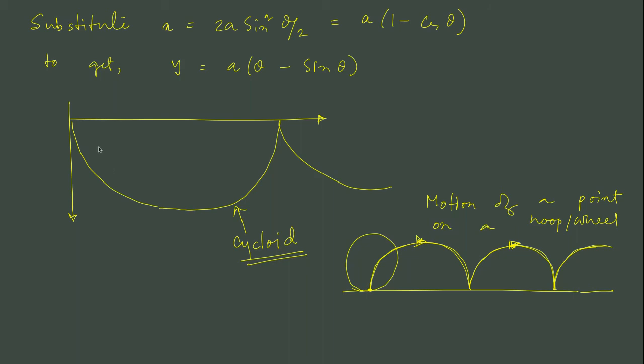It is a very famous problem. I mean earlier people were looking at how we can define a shape along which the journey is minimal. Cycloid is the solution and we got this shape using variational principle. This is a standard example.